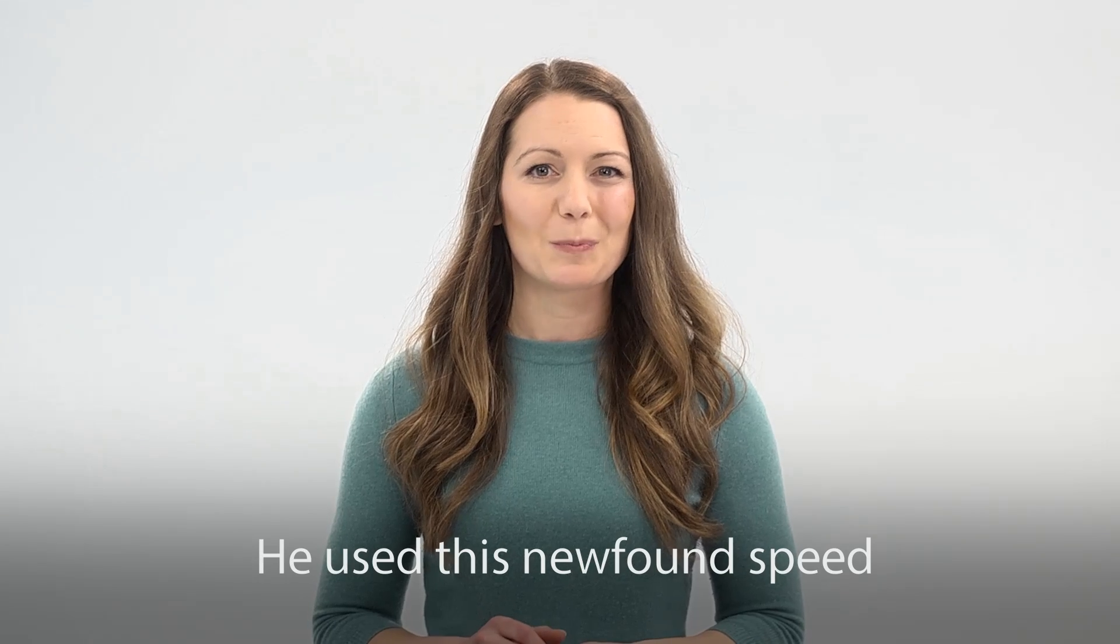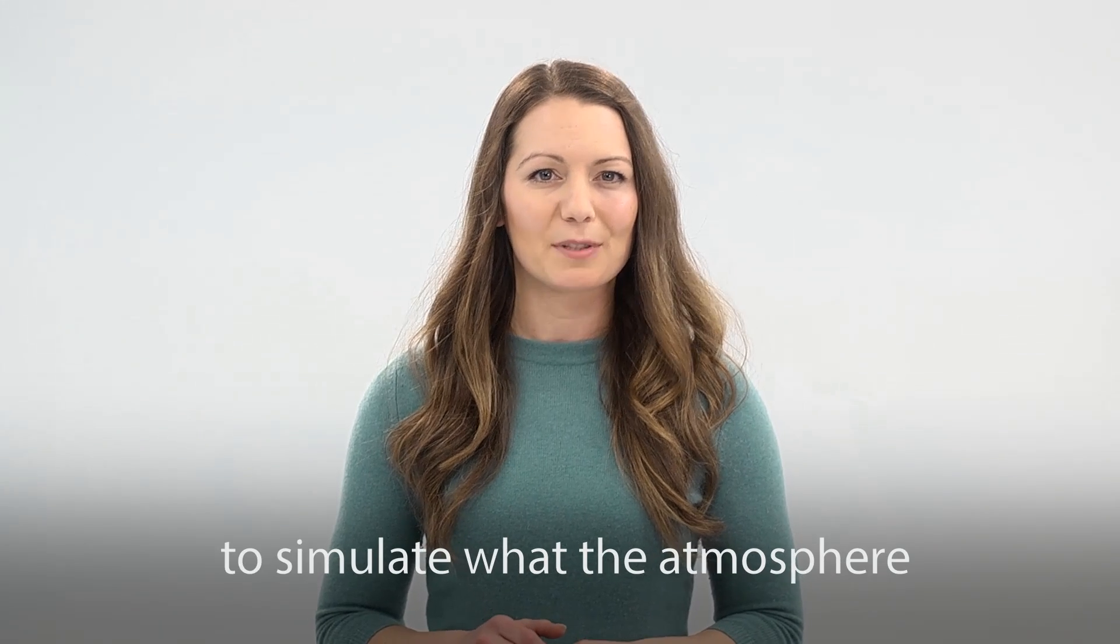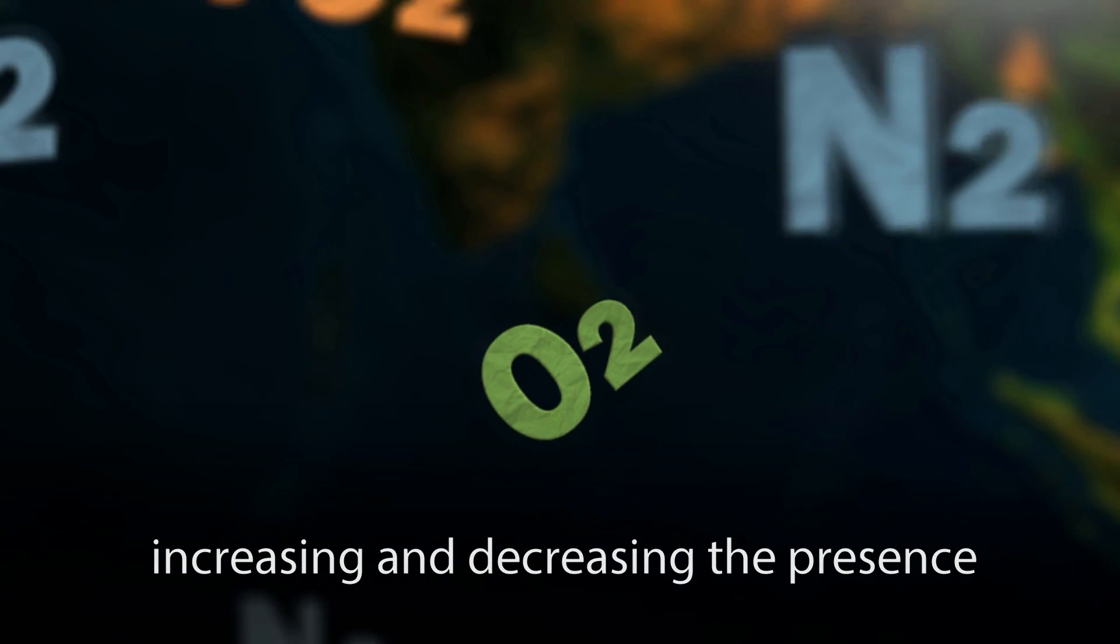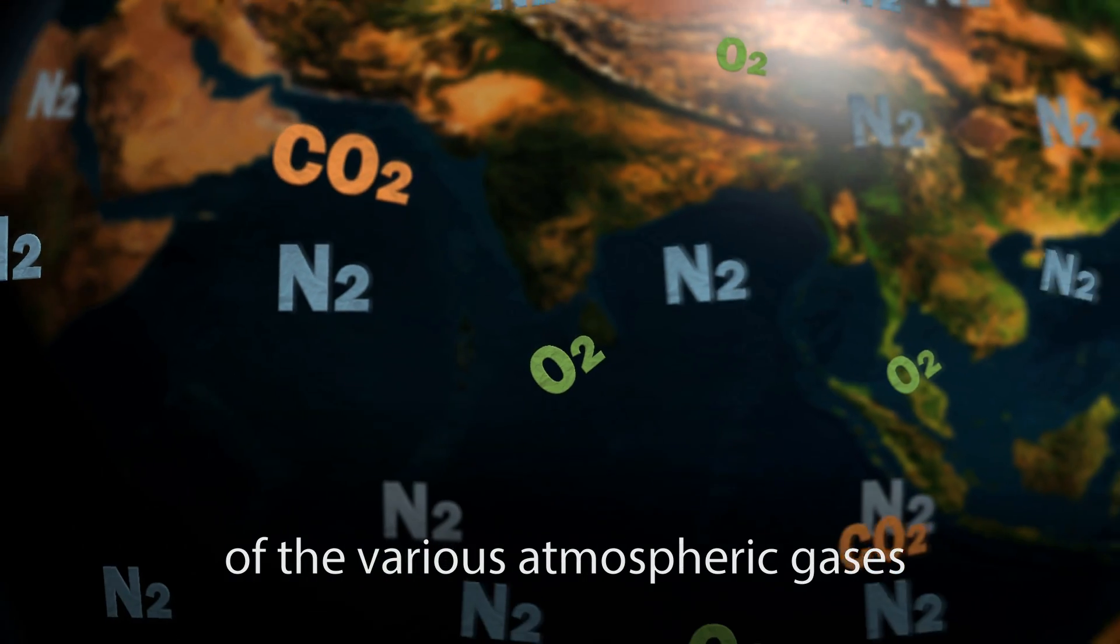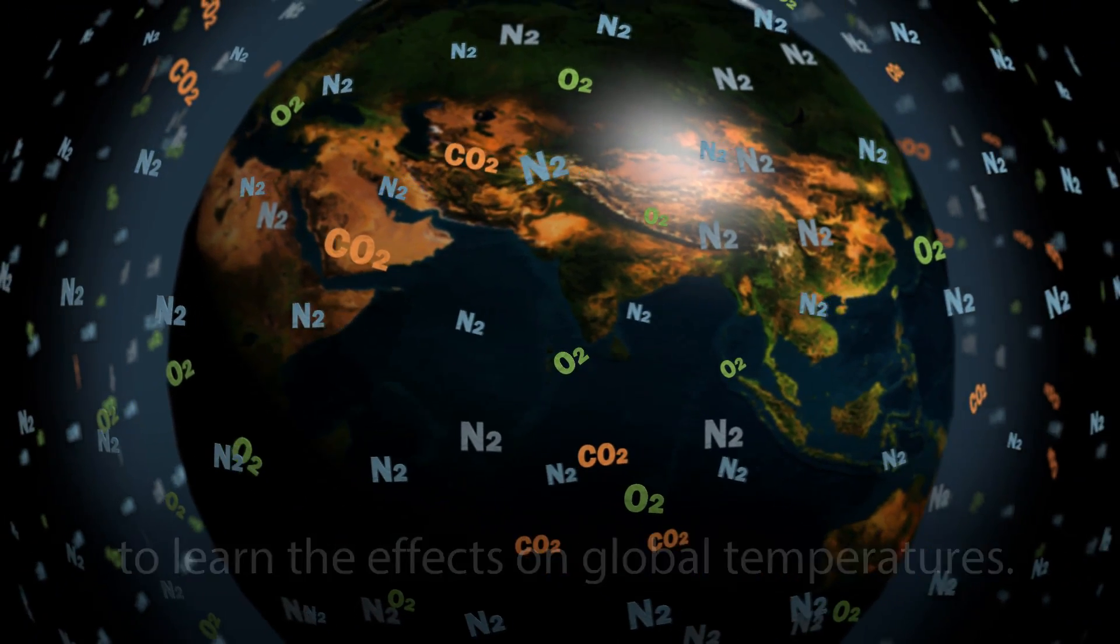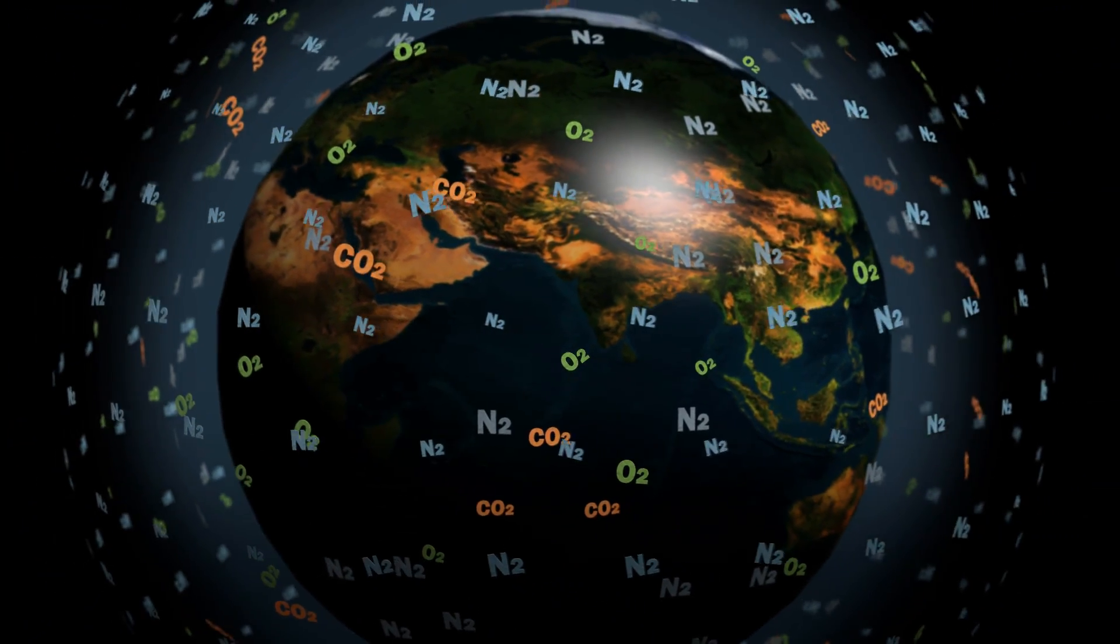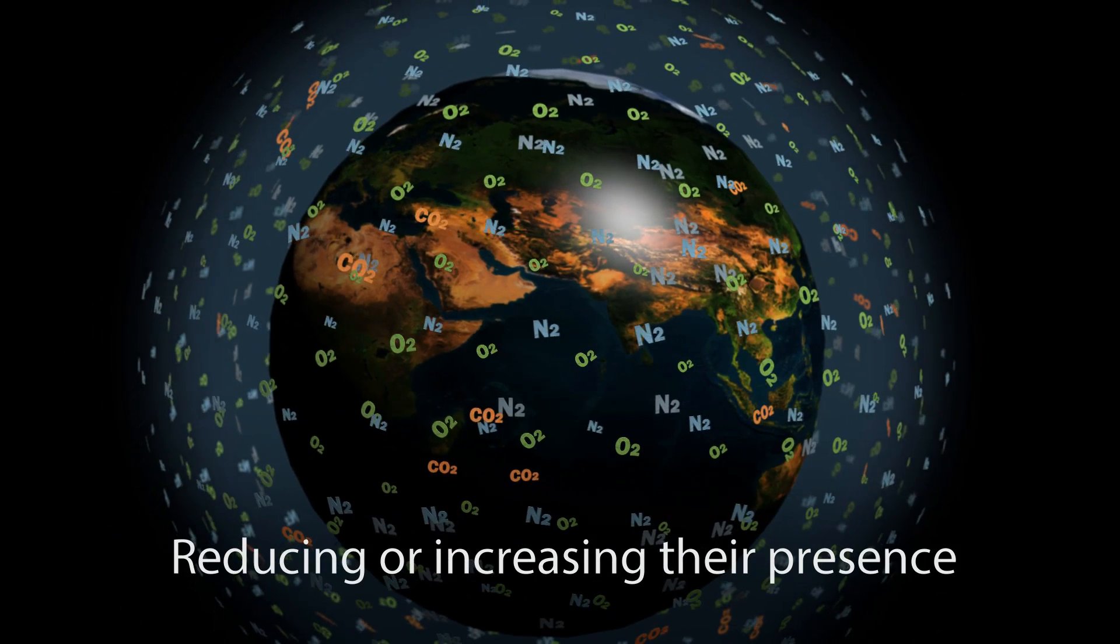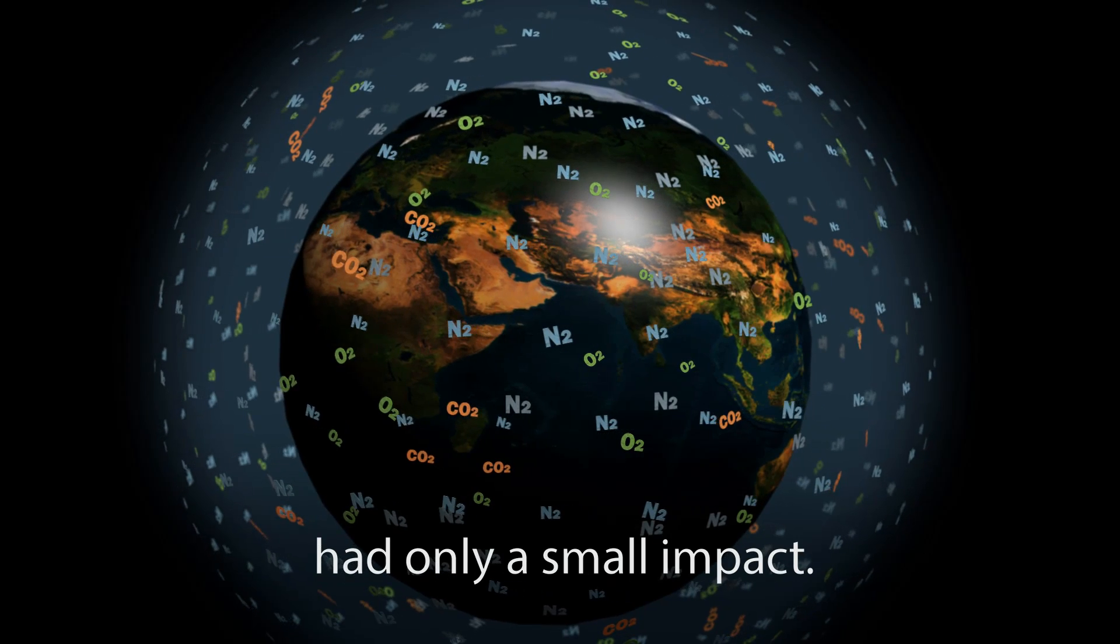He used this newfound speed to simulate what the atmosphere might look like under artificial scenarios, increasing and decreasing the presence of various atmospheric gases to learn the effects on global temperatures. Nitrogen, oxygen, reducing or increasing their presence, had only a small impact.